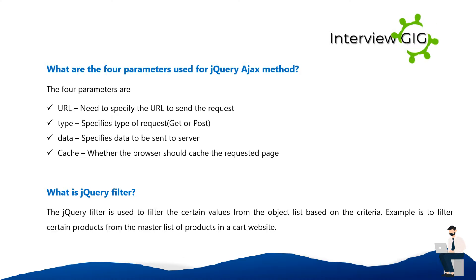What is jQuery filter? The jQuery filter is used to filter certain values from an object list based on criteria. For example, filtering certain products from the master list of products on a cart website.